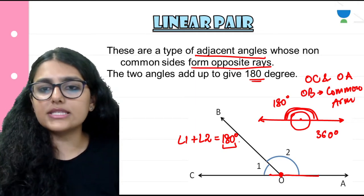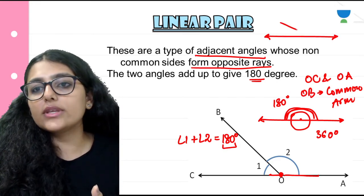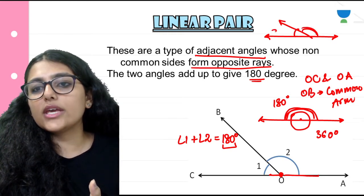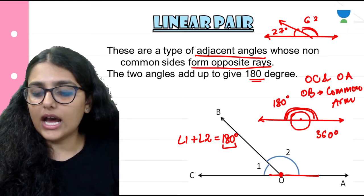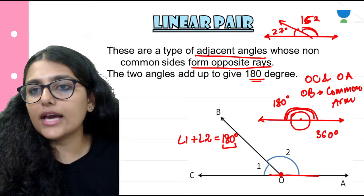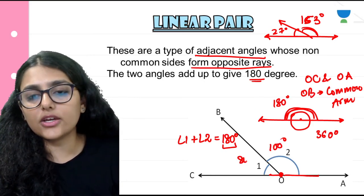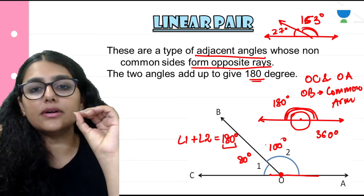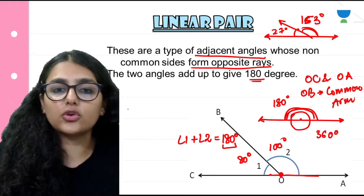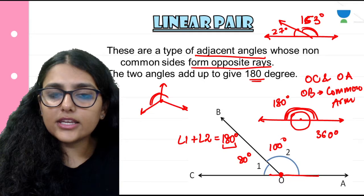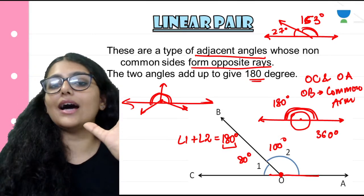Angle 1 and angle 2 can also be called supplementary angles. Supplementary angles can be any two angles given at random whose sum is 180, but the condition for linear pair is that they lie on a straight line and have a common arm. Always remember: all linear pairs are a type of adjacent angles, but all adjacent angles are not linear pairs, because adjacent angles don't need to be on a straight line.